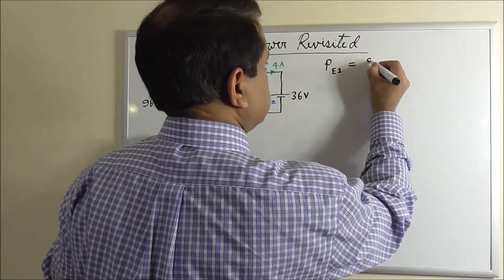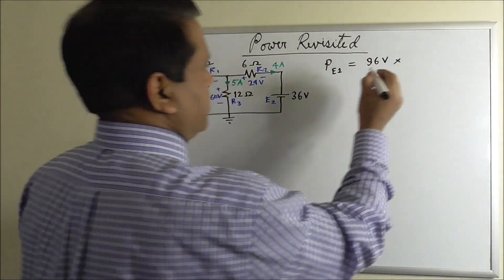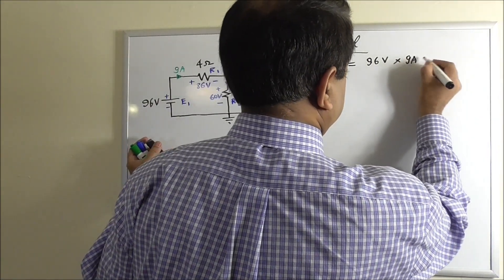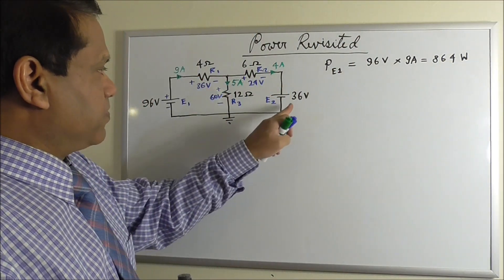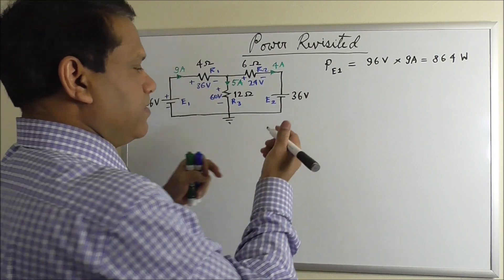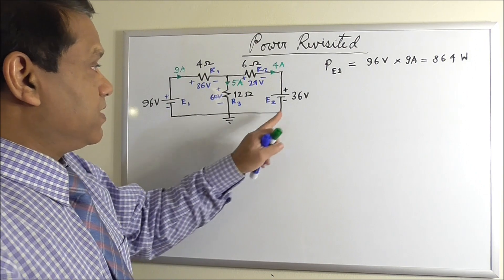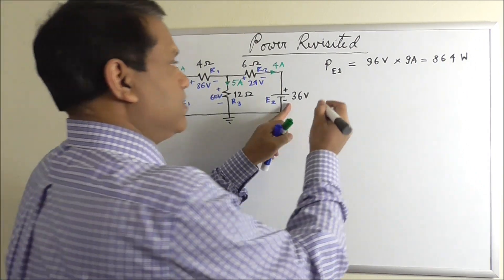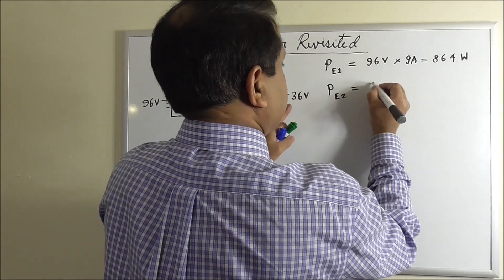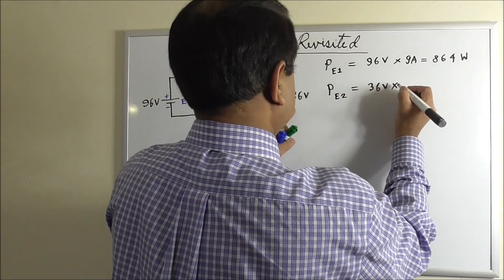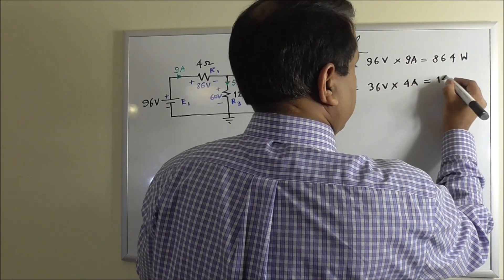So V times I, what is V? 96 volt, times current is 9 ampere. That will be 864 watt. Now what is the power of this? V times I is 36 volt, times 4 ampere current, 144 watt.